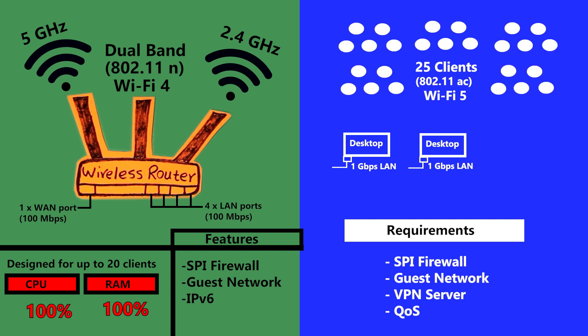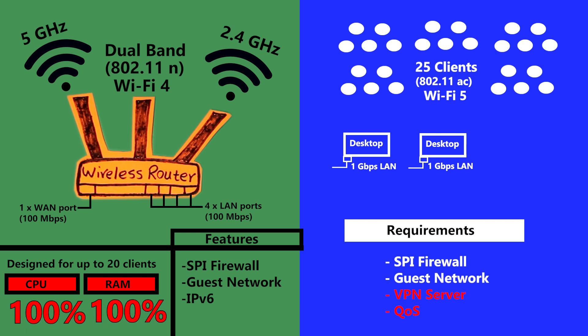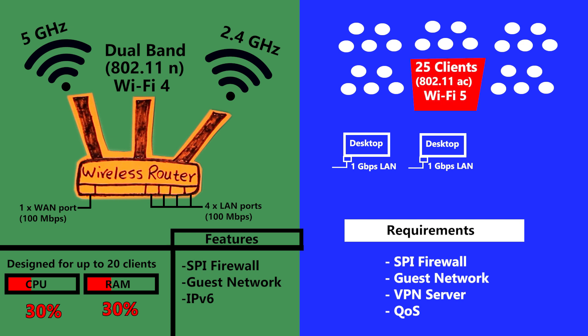Not to mention, if I want to use the VPN server and quality of service features, those will definitely add to the problem. Even if the router is not overloaded, my wireless clients cannot take advantage of Wi-Fi 5 because the router is Wi-Fi 4, which is older and slower. The same goes for wired clients — they cannot take advantage of their Gigabit Ethernet cards, and there is obviously going to be a bottleneck.